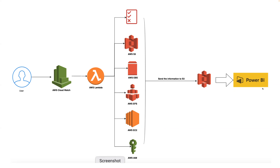As an enhancement, you can also identify stale AWS resources — for example, an EBS volume created six months ago that hasn't been used. Your Lambda function, using CloudWatch, can watch for these stale resources and put that information into Power BI so management can see which unused services are costing money and decide to delete them.